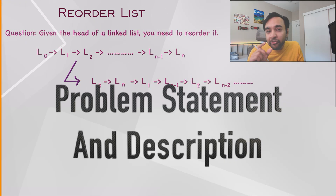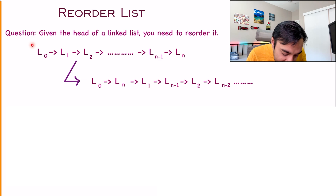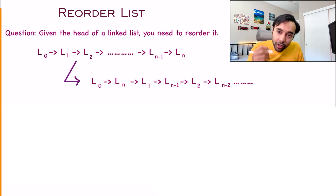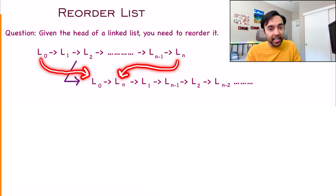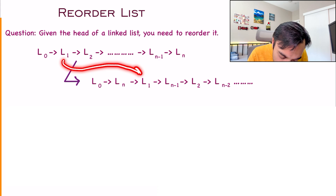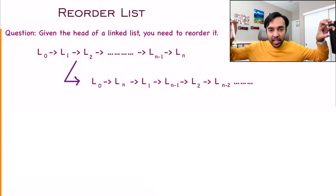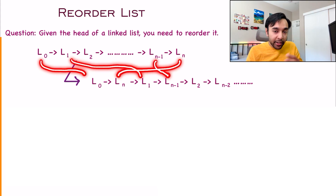The problem statement is very specific. You are given the head of a linked list which has n elements. You have to reorder it in a very certain way. After you reorder, the first element should be the first element of the linked list, then the second element should be the last element. Going forward, the third element should be the second element and the fourth should be the second last. So basically, you are picking one element from the first and then one from the last, then the second element and then the second last.